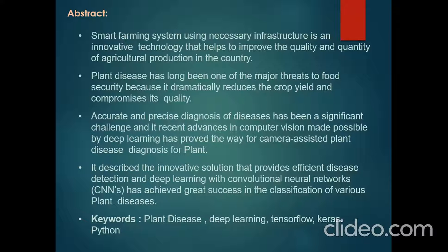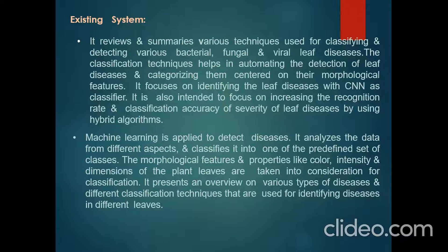At a very early stage, the symptoms of diseases that appear on plant leaves can be detected. This also covers a survey on different disease classification techniques for plant leaf disease detection. Image segmentation, an important aspect for disease detection, is done using a genetic algorithm. The existing system reviews and summarizes various techniques for classifying and detecting various plant leaf diseases such as bacterial, fungal, viral, and others. Machine learning classification techniques are applied to real diseases, analyzing data from different aspects and classifying it into predefined classes. Morphological features such as color intensity and dimensions of plant leaves are taken into consideration.